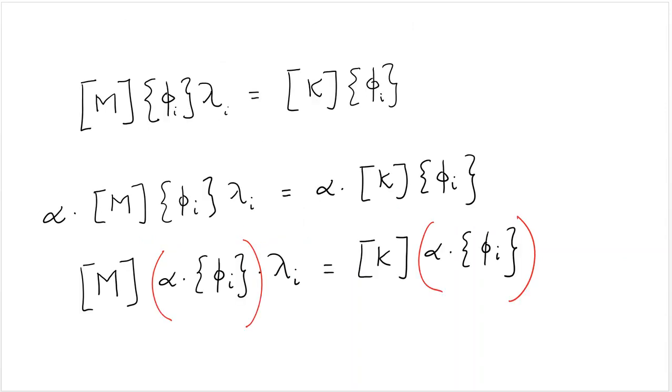The other important property is that a mode shape doesn't mean anything by itself, in terms of the numbers. What matters is the shape. Because if I take a mode shape, like if I start with the eigenvalue problem here, and I multiply both sides by a scalar alpha, then I bring that alpha to multiply the mode, I find that if phi is a mode, alpha times phi is also a mode for any alpha that you pick.